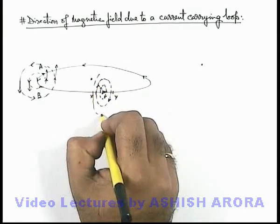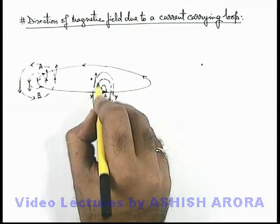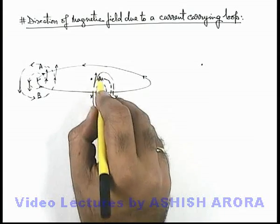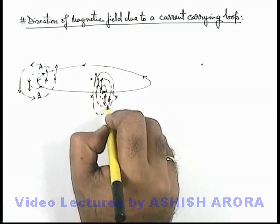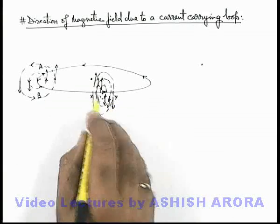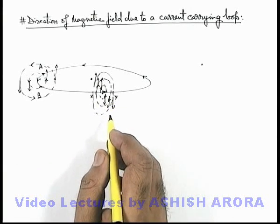And here you can see in this situation again, at every interior point of the loop magnetic field is in upward direction and exterior points in the plane of loop it'll be in downward direction.